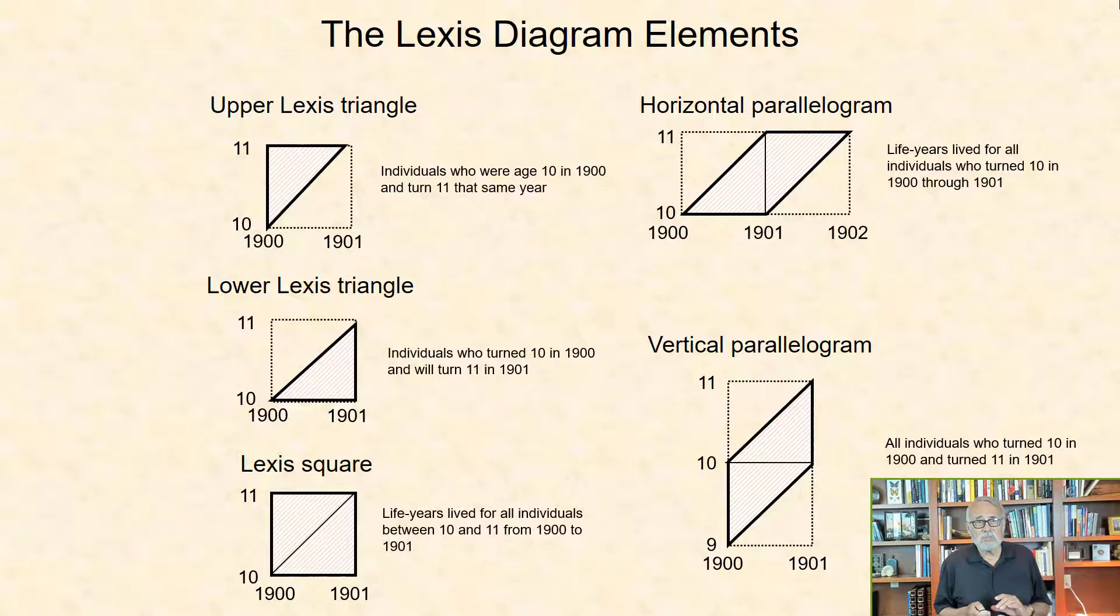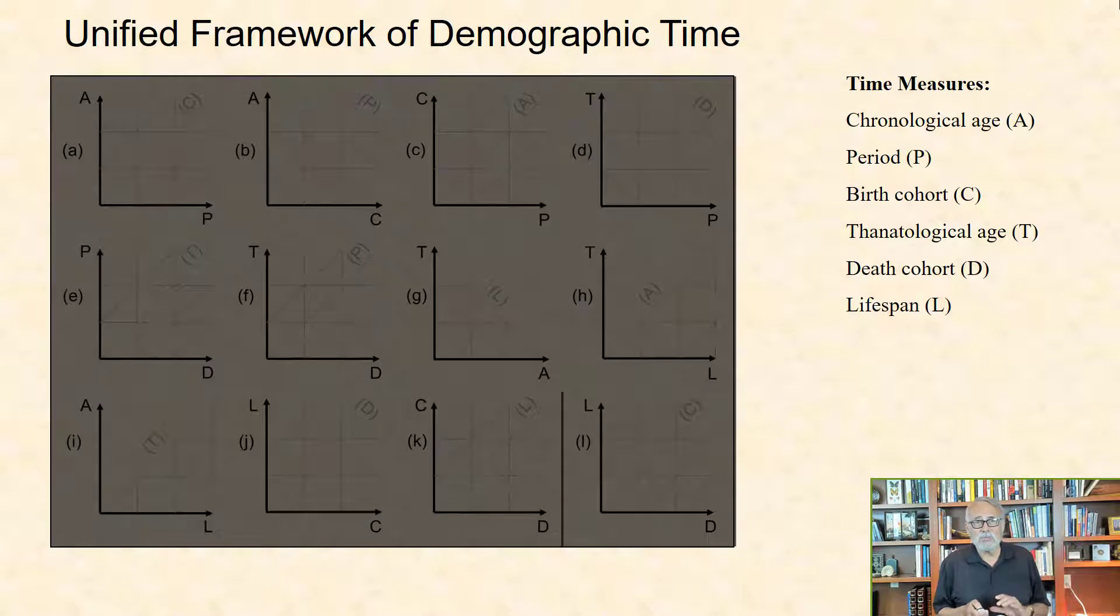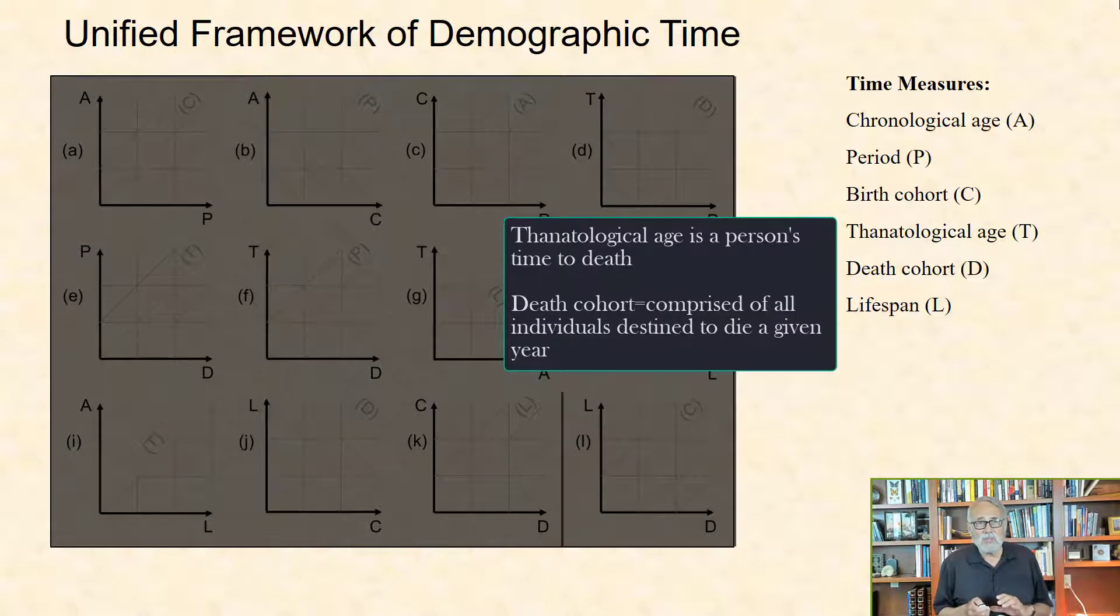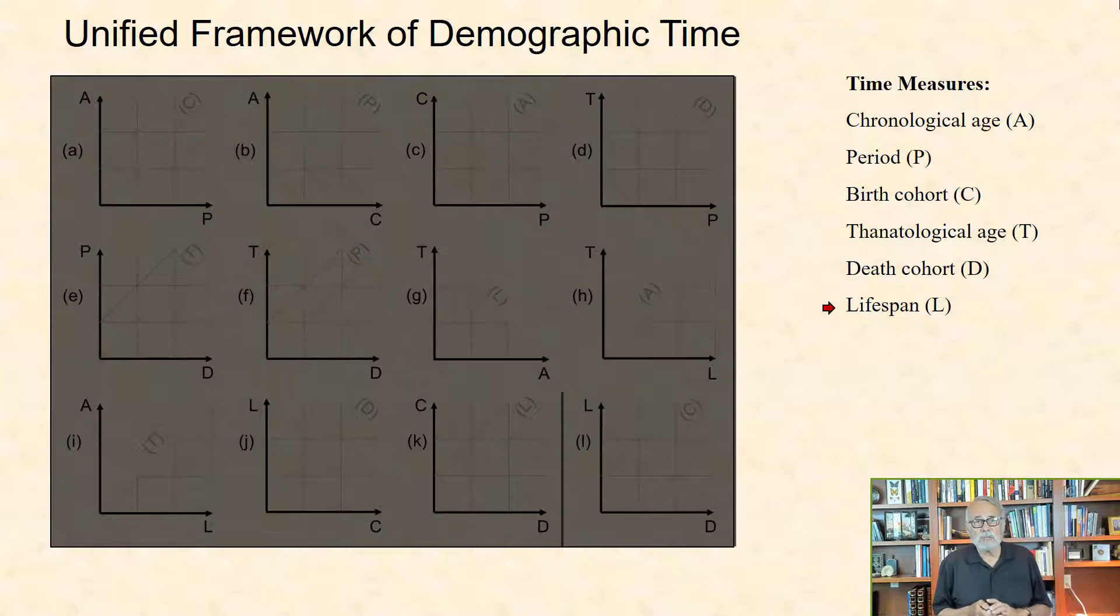Based on six time measures contained in the description earlier, including chronological age A, period P, birth cohort C, thanatological age T, death cohort D, and lifespan L, Tim Riffe and his colleagues at the Max Planck Institute in Rostock, Germany, developed a unifying framework of demographic time using identities and sub-identities that connect all these measures.